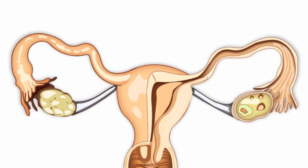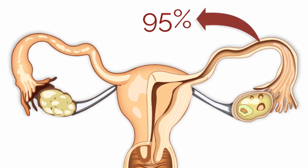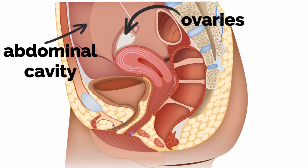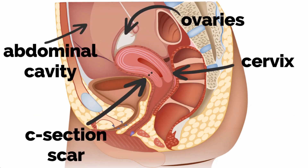Ectopic pregnancies can implant in several locations, but 95% of ectopic pregnancies occur in the fallopian tube. The remaining 5% occur in the ovaries, abdominal cavity, cervix, and cesarean section scars.